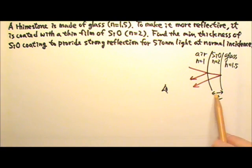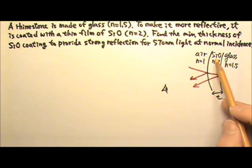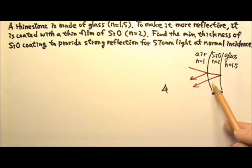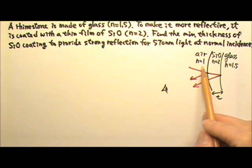So the diagram looks like this. We have glass with n equals 1.5, the silicon monoxide coating with n equals 2, and this part is the thin film. Let's say the thin film has a thickness of T. And then out here we have air with n equals 1.